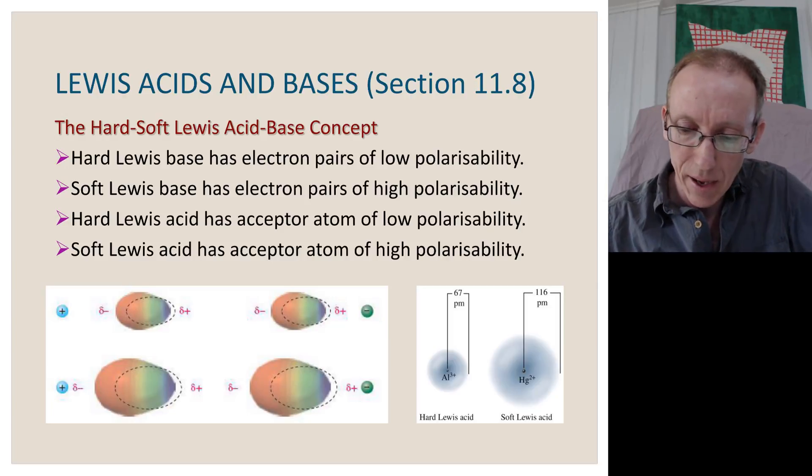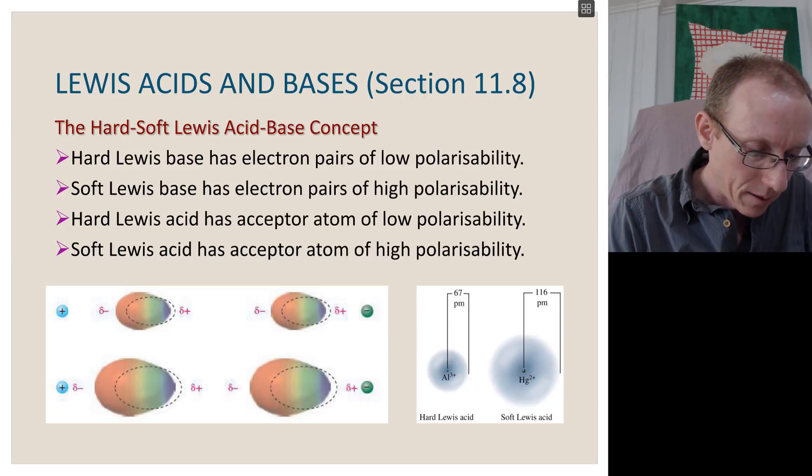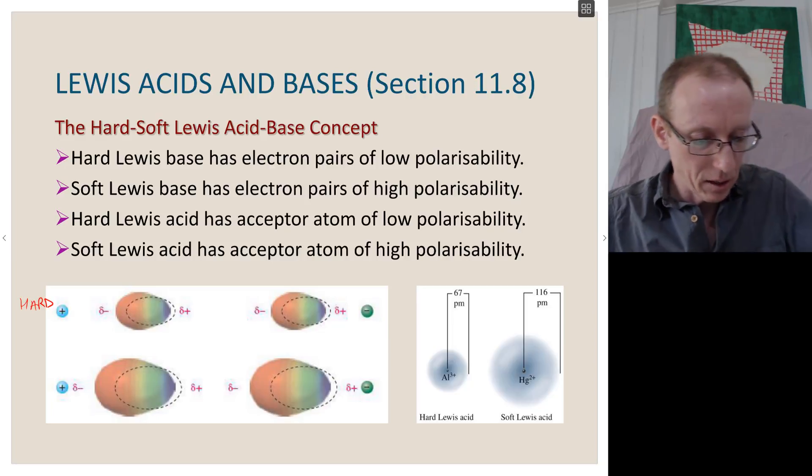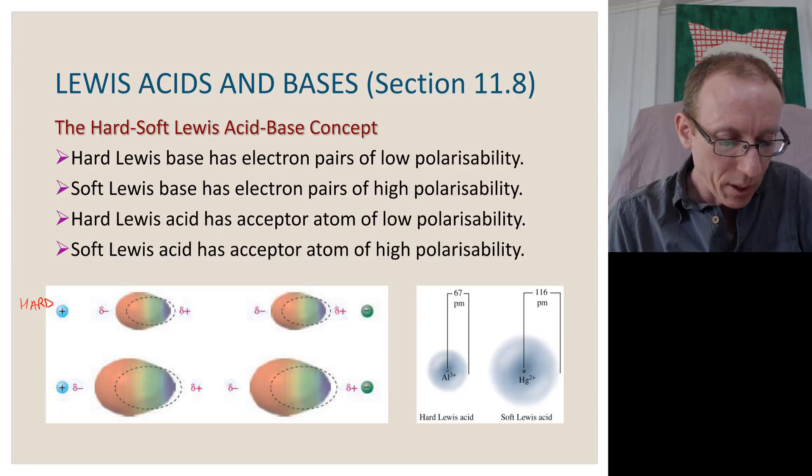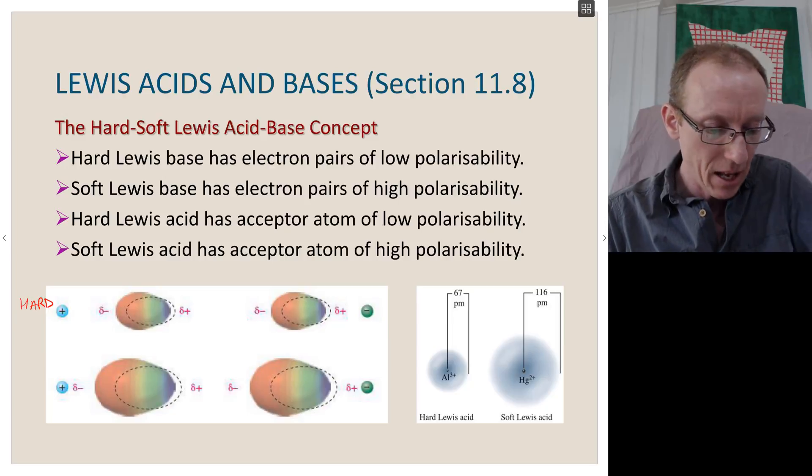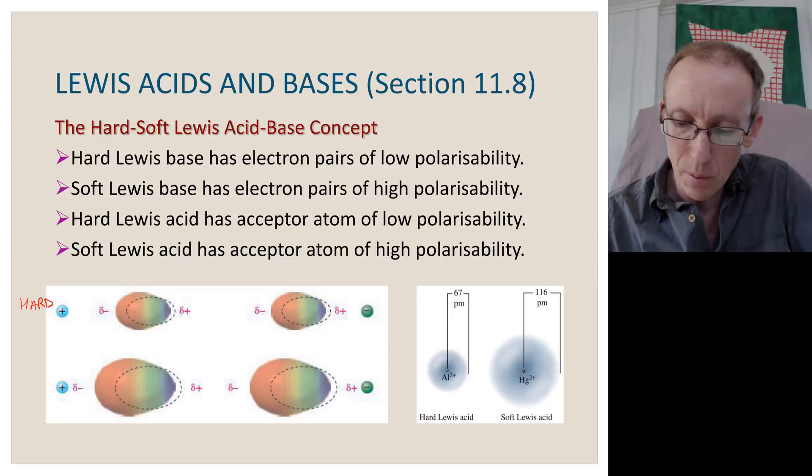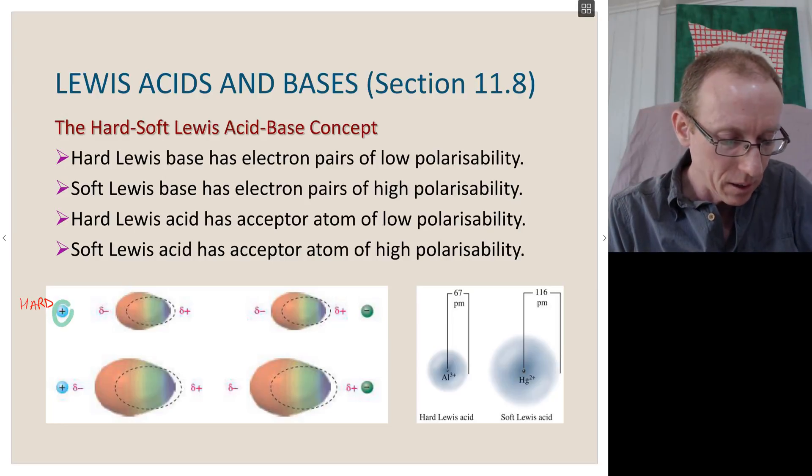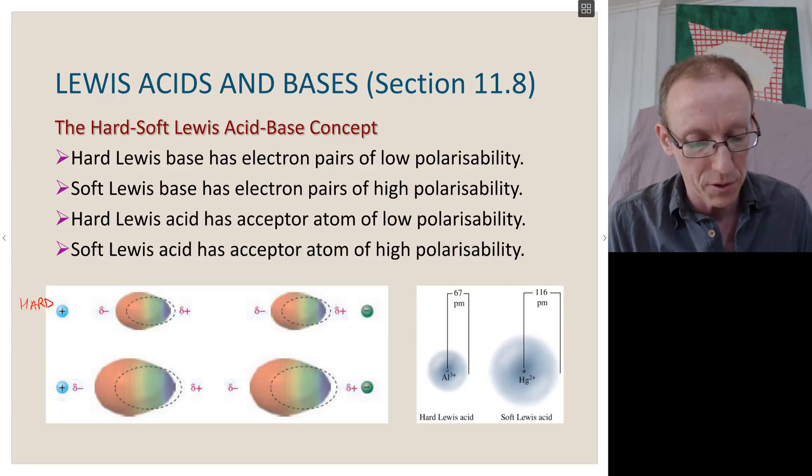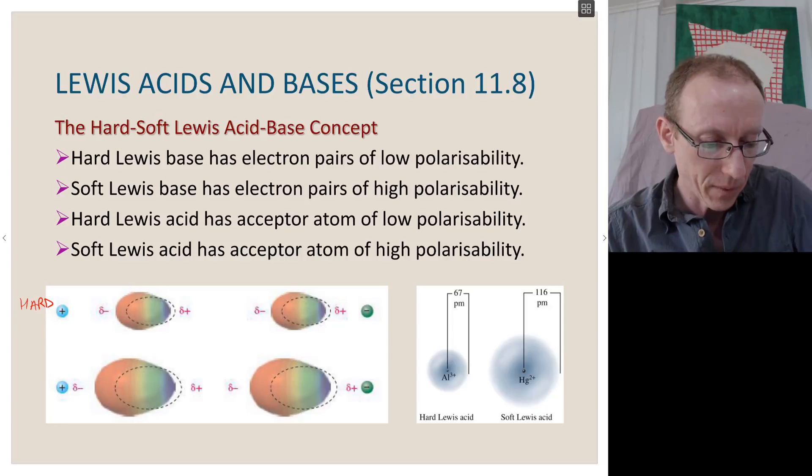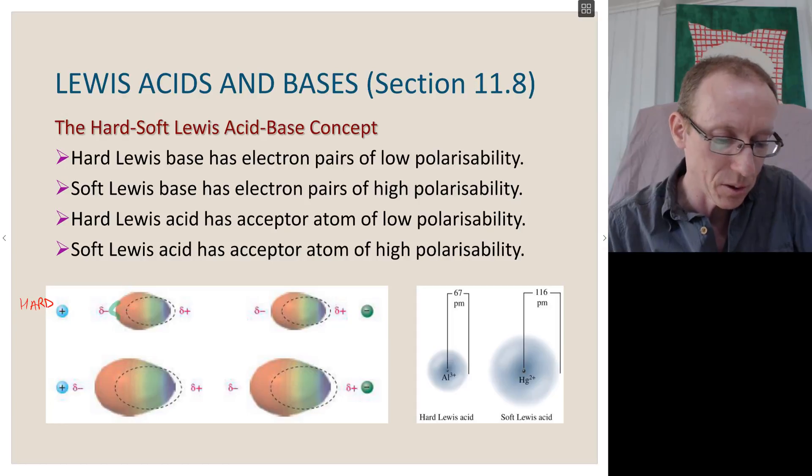So here we've got examples of a hard Lewis acid and a hard Lewis base. So if we take a hard nucleus or a hard acceptor or donor atom and we put a positive charge near it, then what we find is that this positive charge draws some of the electron cloud towards it. So we have this drawing electron density towards that positive charge. But a hard species or a hard atom, that electron cloud will not be drawn much towards it. So it's not very polarizable.